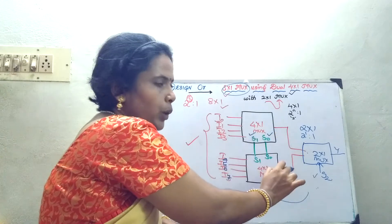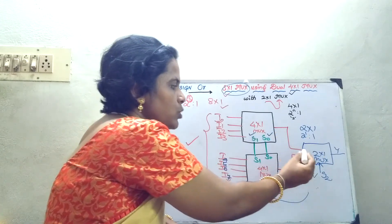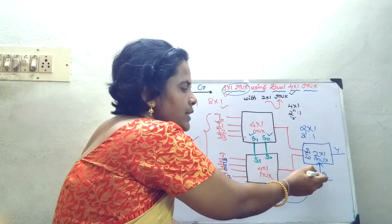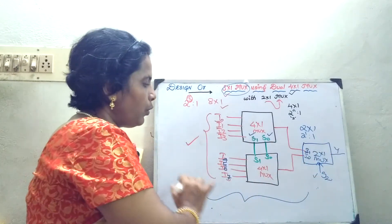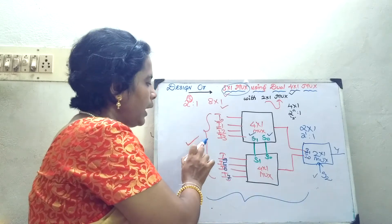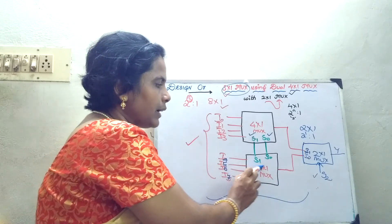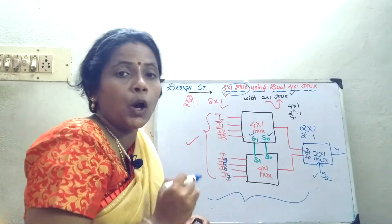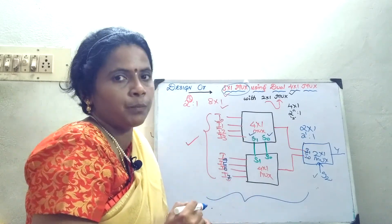What you have to do? Just take 2, 4 cross 1, design your inputs, outputs and select lines. 4 inputs, 2 select lines and 1 output. Each will have 1, 1 output. Now for a 2 cross 1 mux, you will have 2 inputs, I naught and I1, 1 select line and output. When you integrate all these things, you get 8 inputs, 3 select lines S naught, S1 and S2 and 1 output. Now we will see the logic how this circuit diagram works.